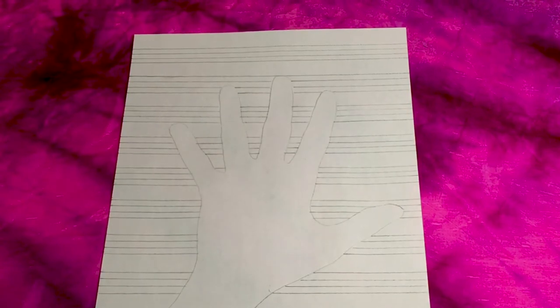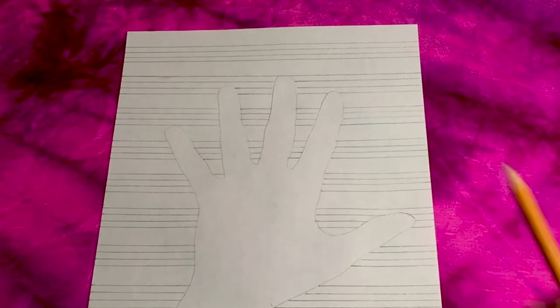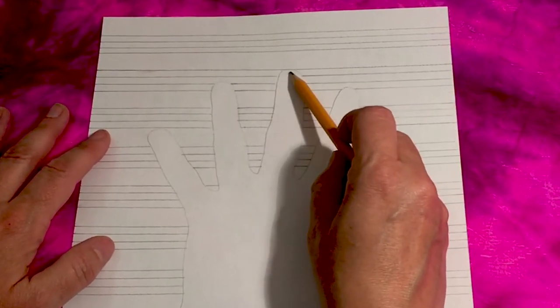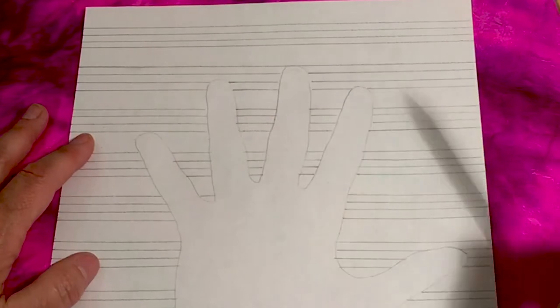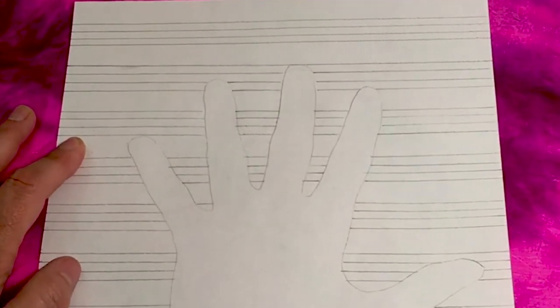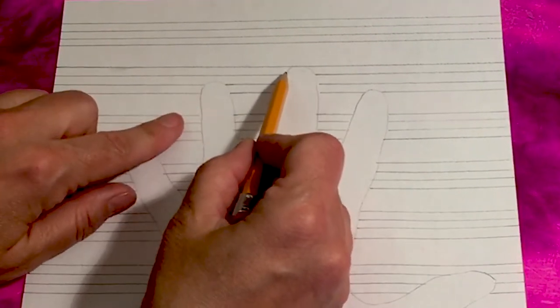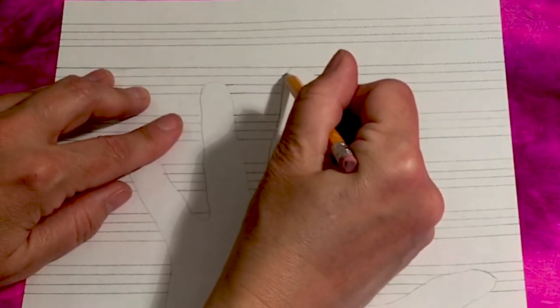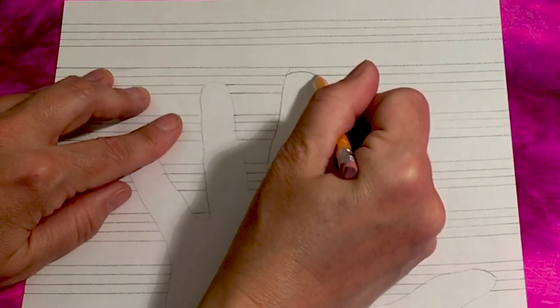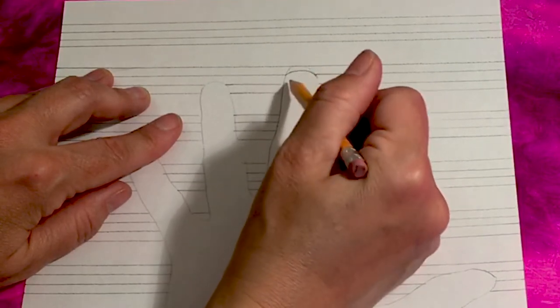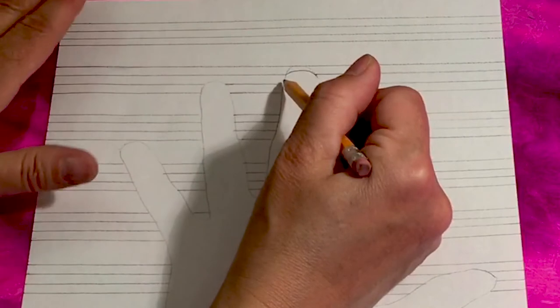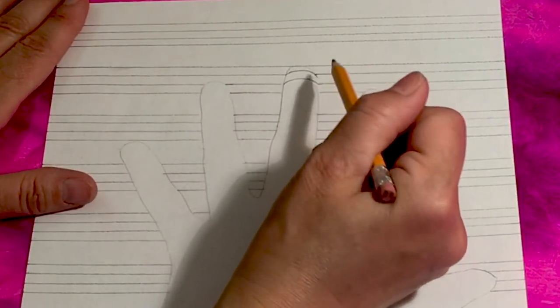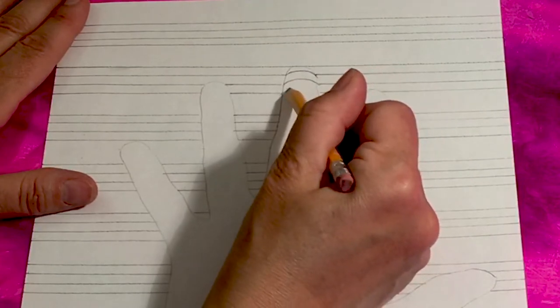So the way that we're going to create part of this illusion is all of the spaces where we left no line in between where the fingers are, we're going to create a little curve. So you're going to find where the line kind of meets the finger and you're going to create a little curve or a bump that goes up towards the top. So it might be kind of like the shape of a fingernail if you think of that shape.